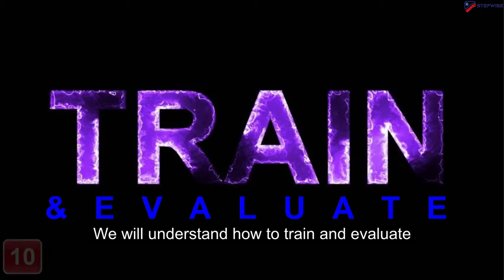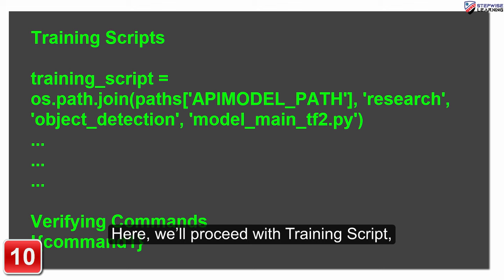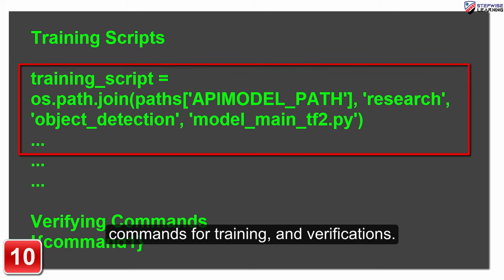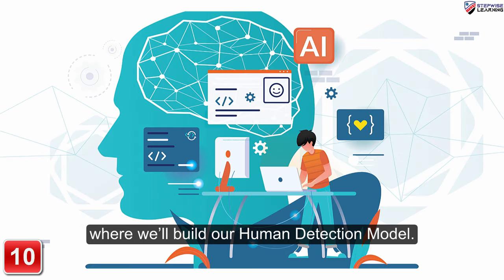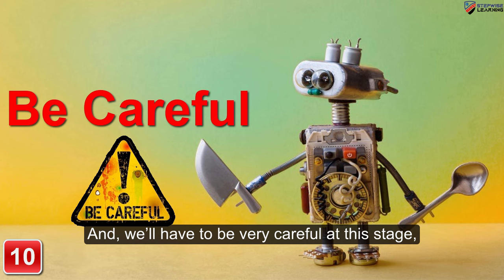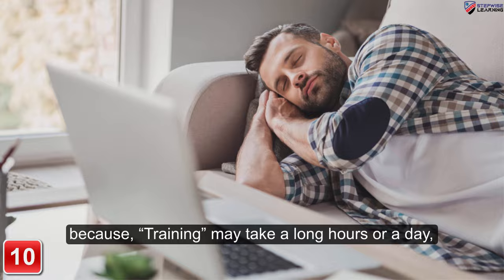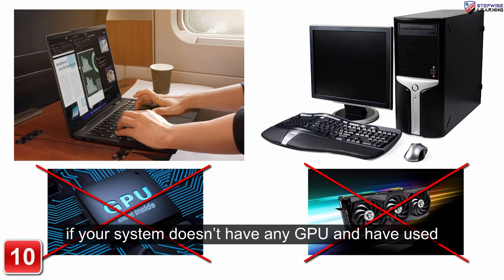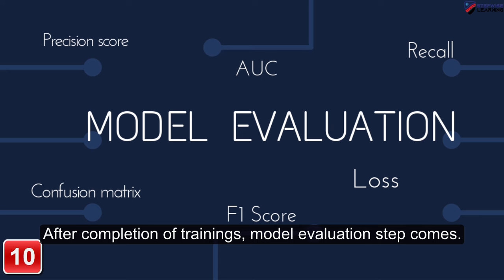In the tenth section, we will understand how to train and evaluate the human detection model. Here we will proceed with the training script, commands for training and verifications. This is the most important section where we will build our human detection model. We will have to be very careful at this stage, because training may take long hours or a day if your system doesn't have a GPU and you have used a higher number of training steps.